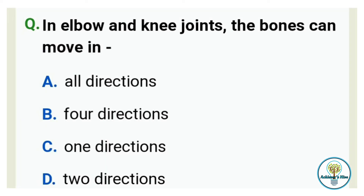In elbow and knee joints, the bones can move in how many directions? Option A: All directions. Option B: Four directions. Option C: One direction. And option D: Two directions. And the correct answer is option C, one direction.